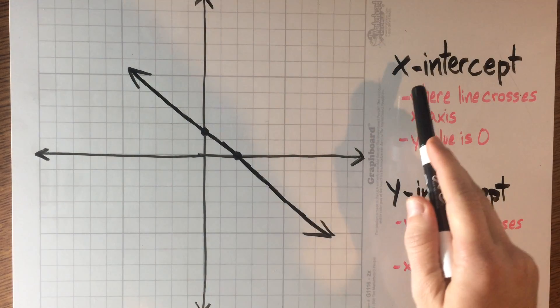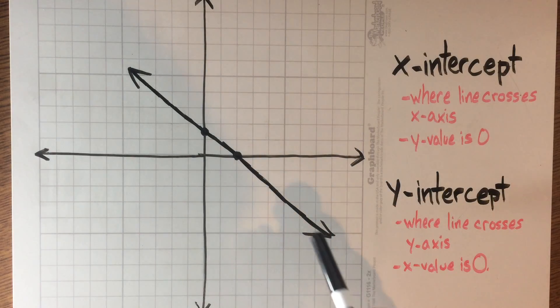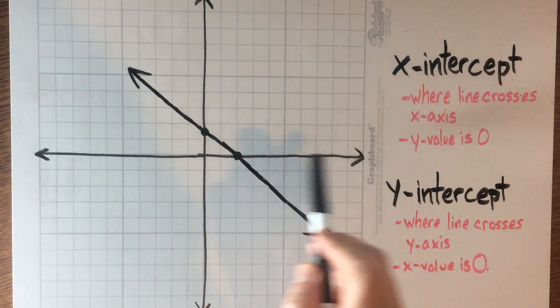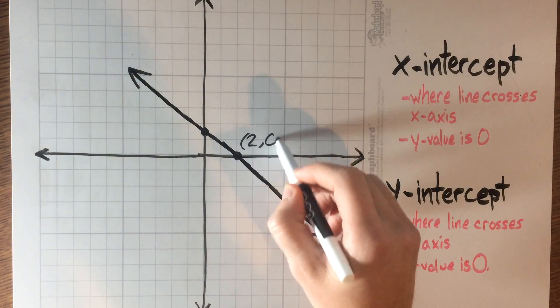So when you have the x-intercept, it is where your line crosses the x-axis. Now if we take a look right here, that would end up being right here. And the point there is 2, 0.